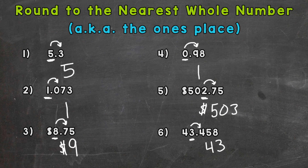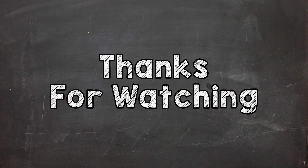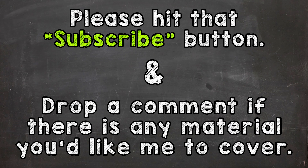So there you have it — that's how you round to the nearest whole number or nearest dollar. It's always going to be the ones place. Take a look next door: five or more, you're going to round up; four or less, it's going to stay the same. Hopefully that helped. Thanks so much for watching. Until next time, peace.